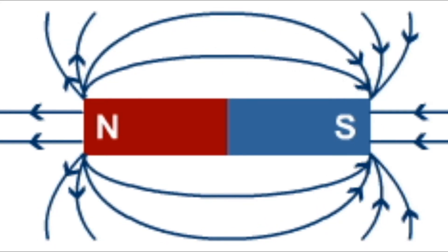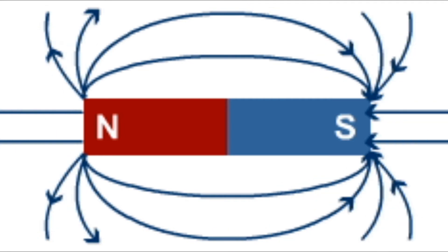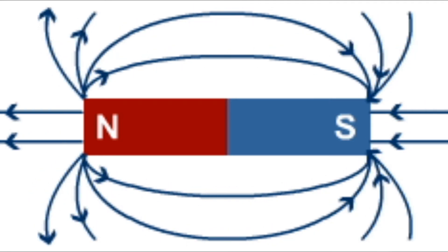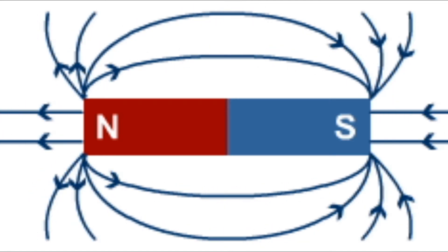This behavior of magnets gives rise to an important law of magnets which states that like poles repel and unlike poles attract.